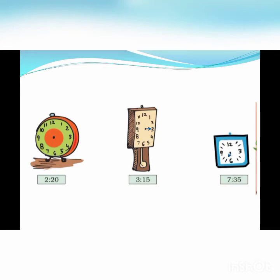Next, 4:45 — that means 4 hours 45 minutes. The hour hand will be in between 4 and 5, and the minute hand will be on 9, because 5 nines are 45. Next one, 2:20 — that means 2 hours and 20 minutes. Try to do it. Here is the answer: 2 hours and 20 minutes. Next one, 3:15 — that means 3 hours and 15 minutes. Both hands lie on 3. And the last one, 7:35 — that means 7 hours and 35 minutes. The hour hand will lie in between 7 and 8, and the minute hand will be on 7, because 5 sevens are 35.